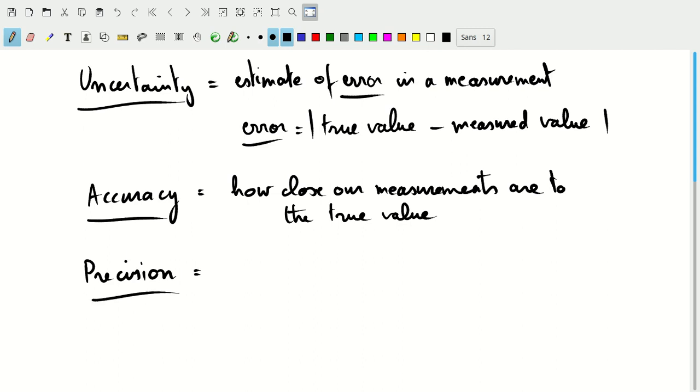Precision is how close are consecutive measurements to each other. If you're measuring a piece of string many different times and get values very close to each other every time, you're measuring something very precisely, but that doesn't mean you're necessarily measuring the true value. Uncertainty is the combined effect of accuracy and precision.